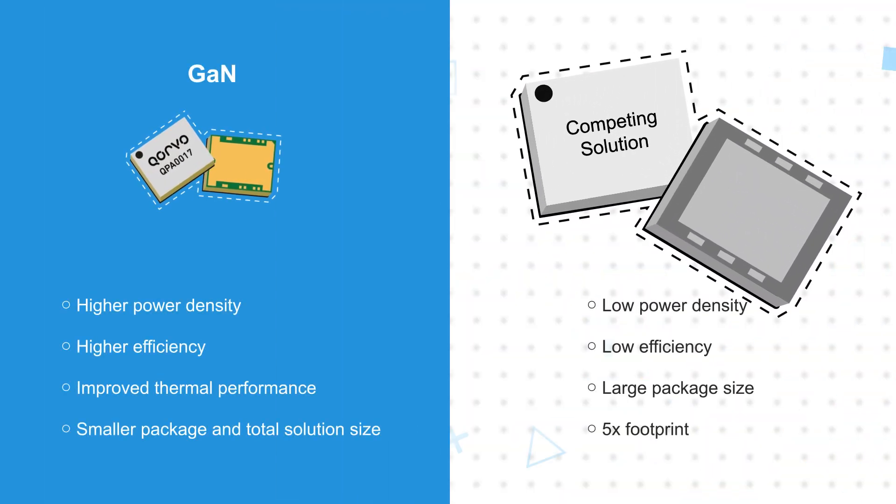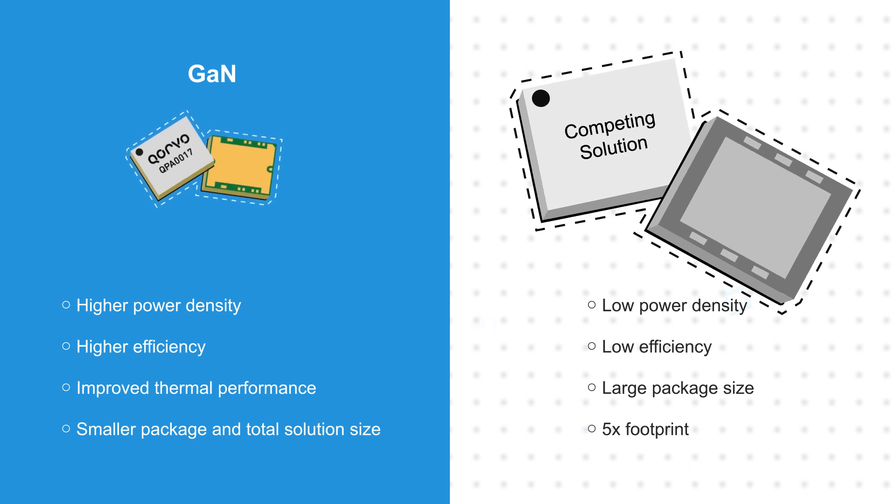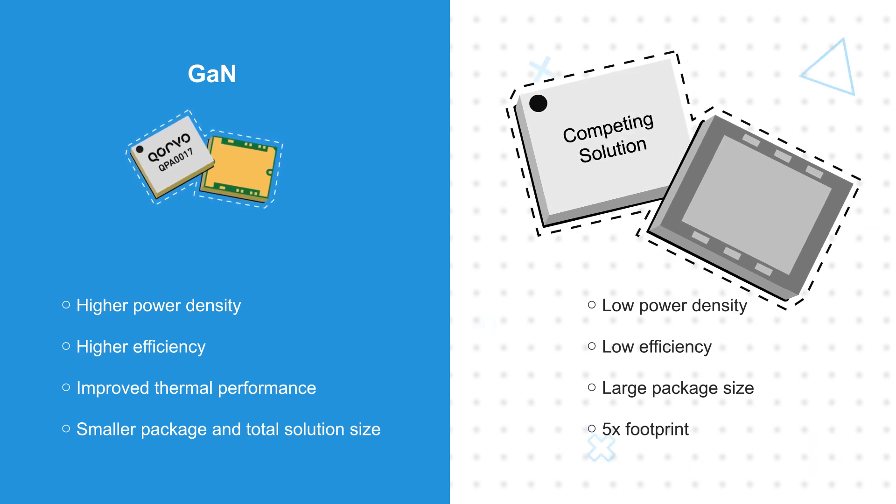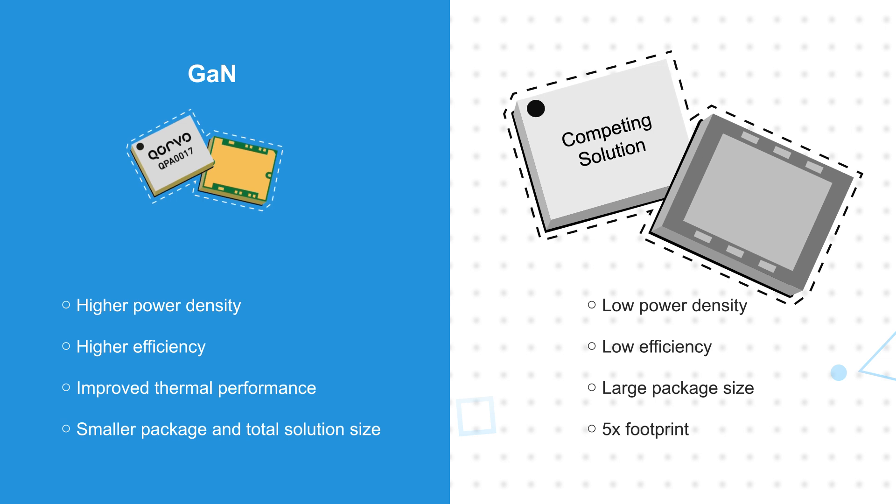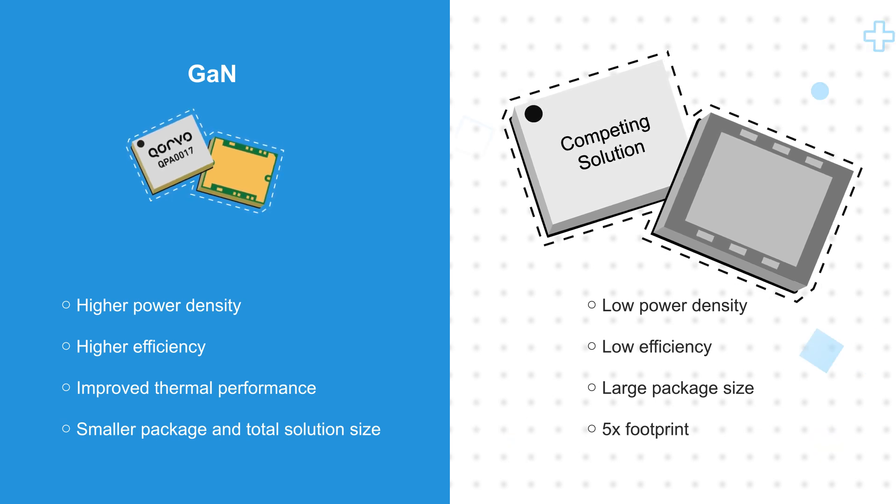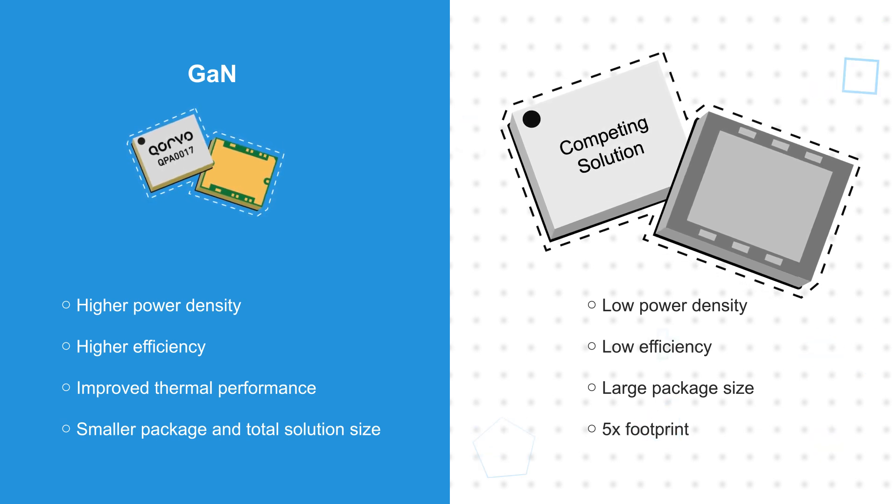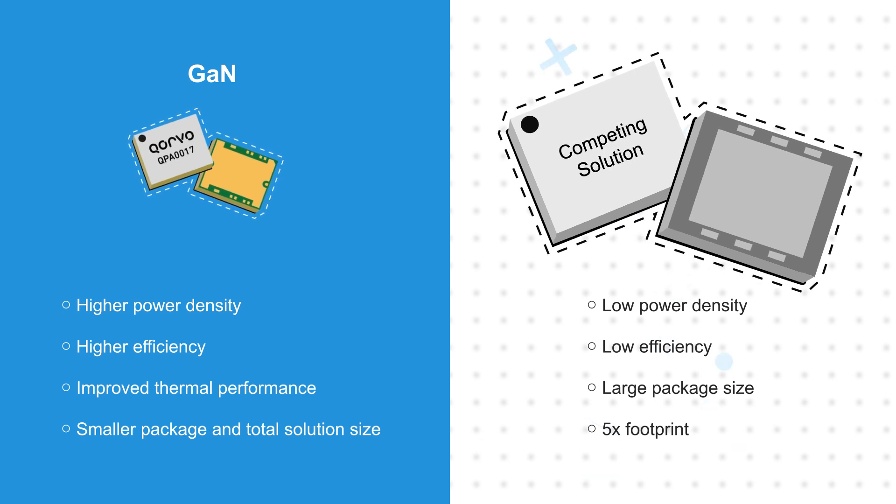GaN offers a higher breakdown voltage and higher current density, which contributes to the high power density and high power added efficiency. These are complemented by the excellent thermal performance of the silicon carbide substrate, allowing for smaller and lighter heat sinks and an 80% reduction in design size.